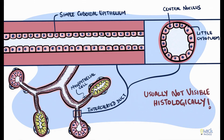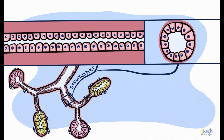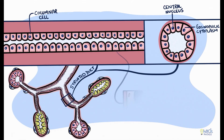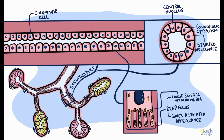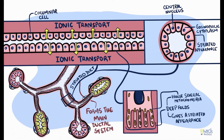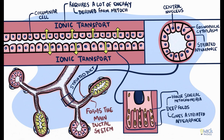Several intercalated ducts join and open into a striated duct. Striated ducts are lined by columnar cells which have a centrally placed nucleus and an eosinophilic cytoplasm. The basal end of the striated ductal cell is thrown into numerous deep folds housing several mitochondria. These deep folds give the basal surface of the cell a striated appearance under the microscope, hence the name. These ducts form the main portion of the salivary gland ductal system and are responsible for most of the ionic transport in the saliva as it travels from the end piece to the oral cavity, which is why these cells possess several mitochondria in the basal folds.